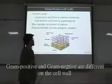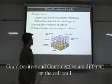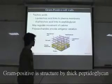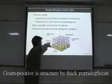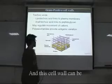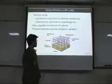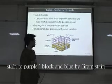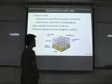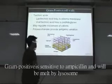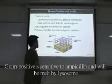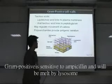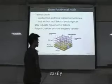Green positive and green negative is different on the cell wall. Green positive is charged by thick anti-glycer. And the big silver can be stem to purple, black and blue by green stem. Green positive is sensitive to green and green, and will be melted by the lysosome easily.